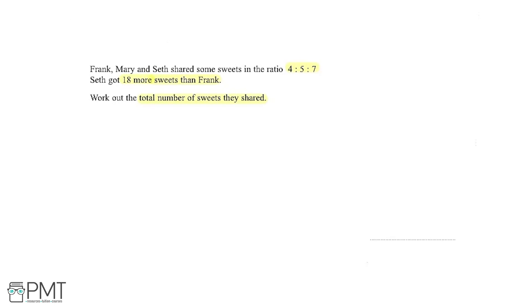I'm going to write this out so it's a bit clearer. Frank is F, Mary is M, and Seth is S. They share the sweets in the ratio 4, 5, 7.